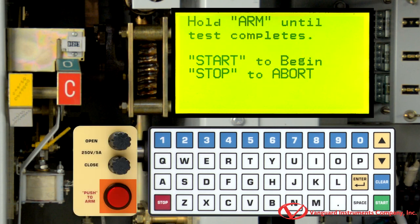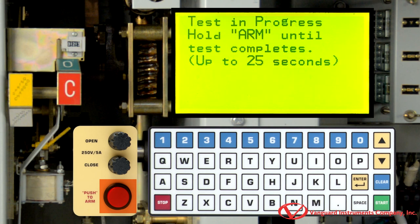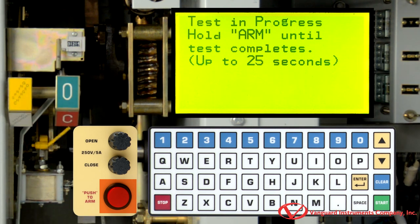Now, hold down the arm switch and then press the start key to start performing the test. Continue holding down the arm switch until testing is complete. Once testing is finished, we will be returned to the main menu.